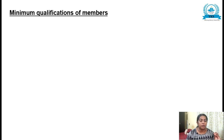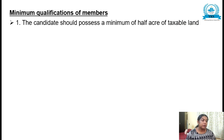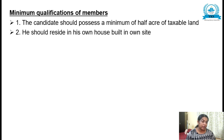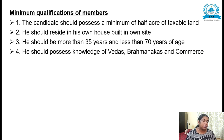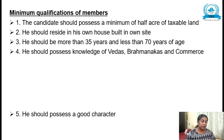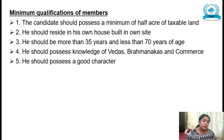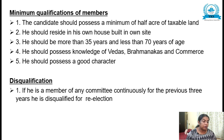There were certain minimum qualifications for members. The candidate should possess a minimum of half an acre of taxable land; he should reside in his own house; he should be more than 35 years and less than 70 years of age; he should possess knowledge of the Vedas, Brahmanas, and commerce; and he should possess good character.